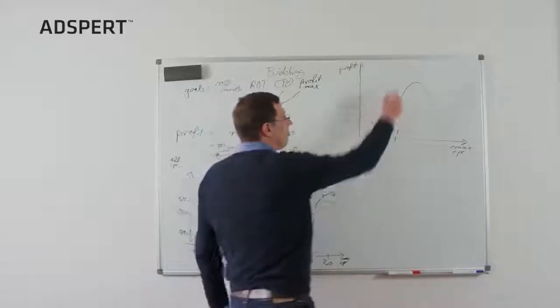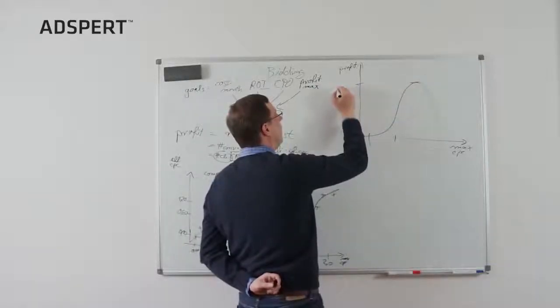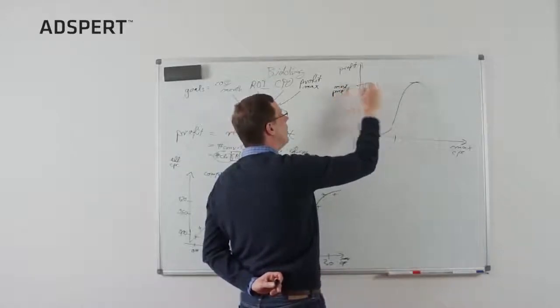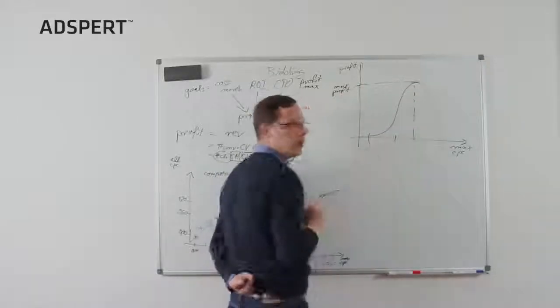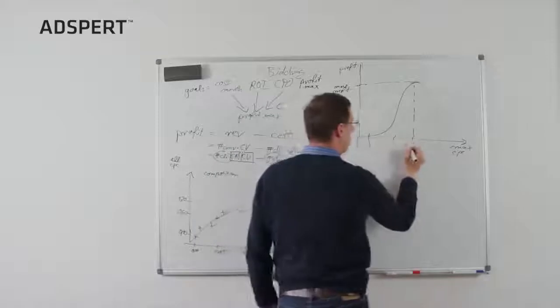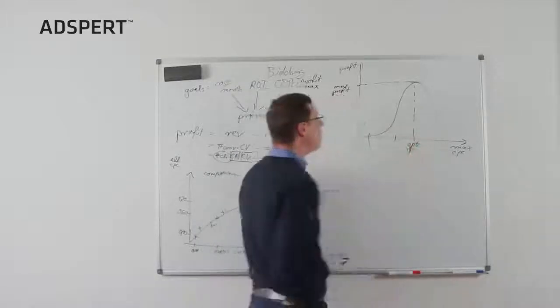So, of course, obviously, there is a max profit somewhere. And, of course, this maximum profit belongs to a certain bid which we call optimal CPC bid. And that's the bid we place.